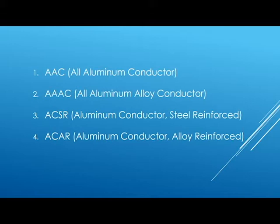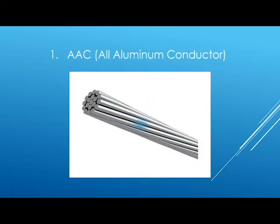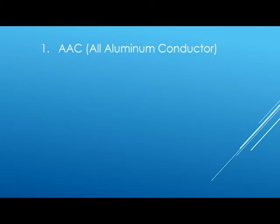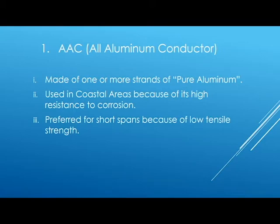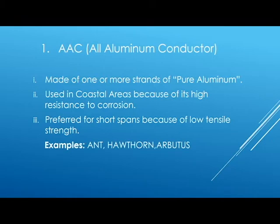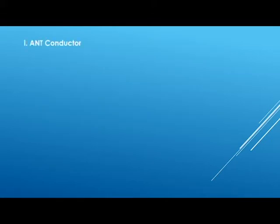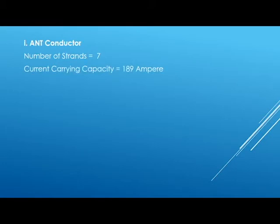First, we will discuss All Aluminum Conductor. All Aluminum Conductor is made of one or more strands of pure aluminum. It is mostly used in coastal areas because of its high resistance to corrosion. It is normally preferred for short spans because it has low tensile strength. Some examples of AAC conductors are Ant, Hathron, and Arbutus. The Ant conductor has a total number of seven strands.